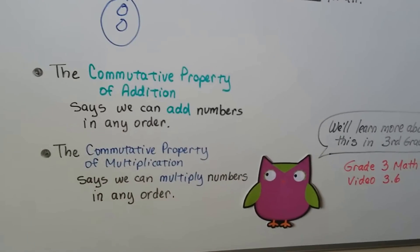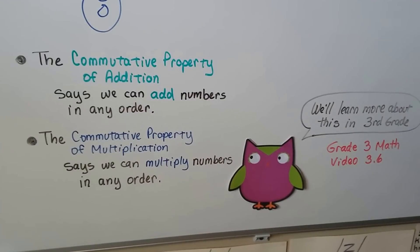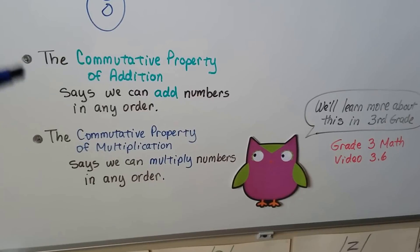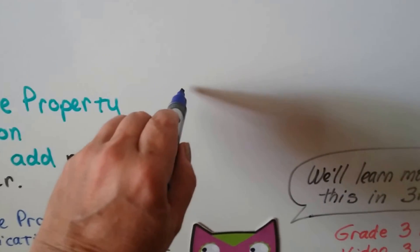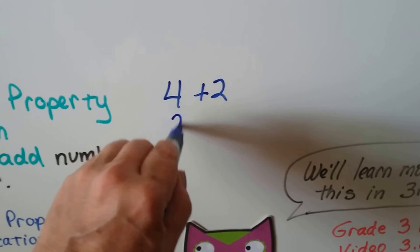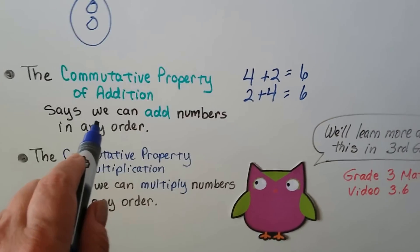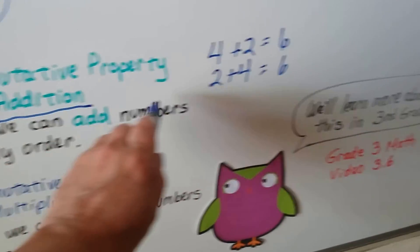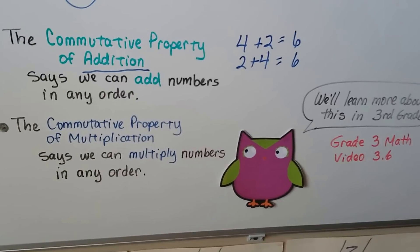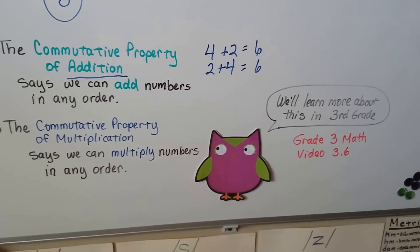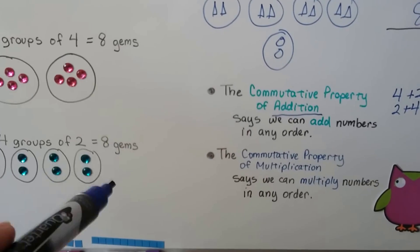For those of you who can follow along, here's something you'll learn in third grade. There's the commutative property of addition, which says we can add numbers in any order — four plus two equals the same as two plus four; they both equal six. There's also a commutative property of multiplication, which says we can multiply numbers in any order. Two times four or four times two both equal eight.